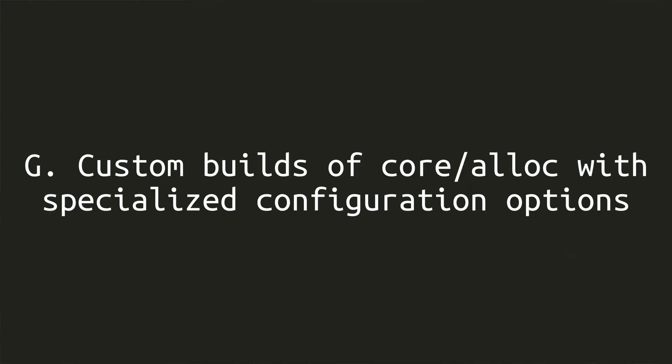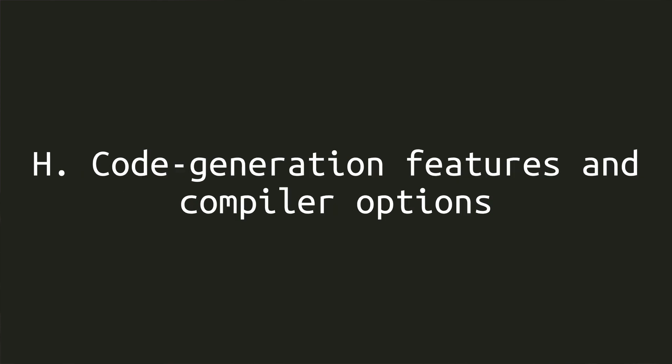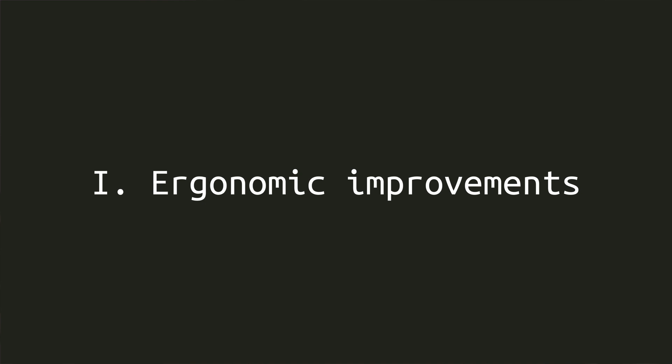Stretch goal G is to find agreement on configuration options for building the Rust core libraries and provide a standardized version for use by the kernel. Stretch goal H is to stabilize code generation features and compiler options that Rust for Linux needs. Stretch goal I includes creating more ergonomic versions of special patterns for safe pinned initialization and finding a solution to custom field projection for pin types or other smart pointers. These are stretch goals only because no one has committed to doing them yet. If you'd like to contribute, reach out to someone on the Leadership Council on the Rust Lang website.